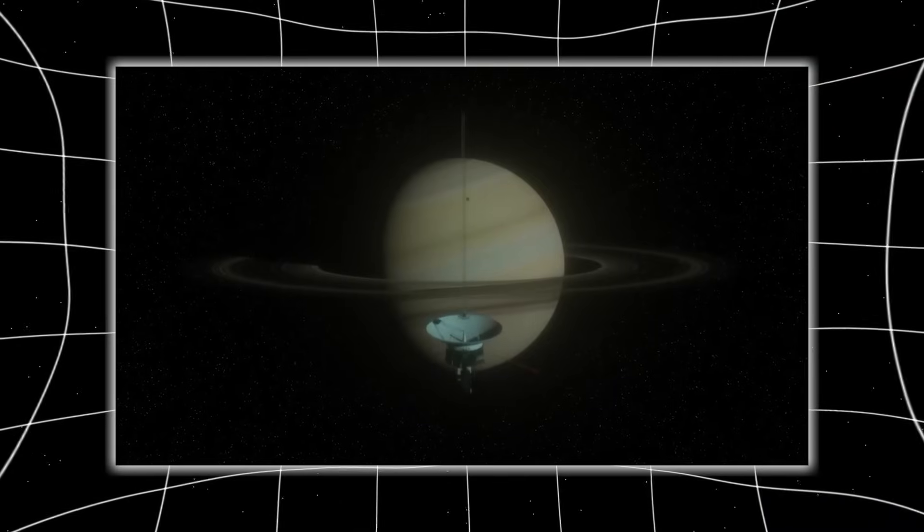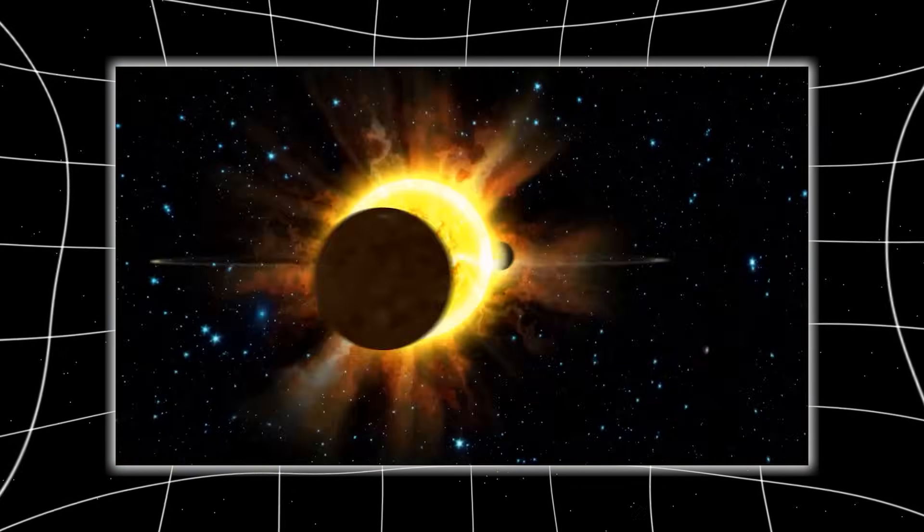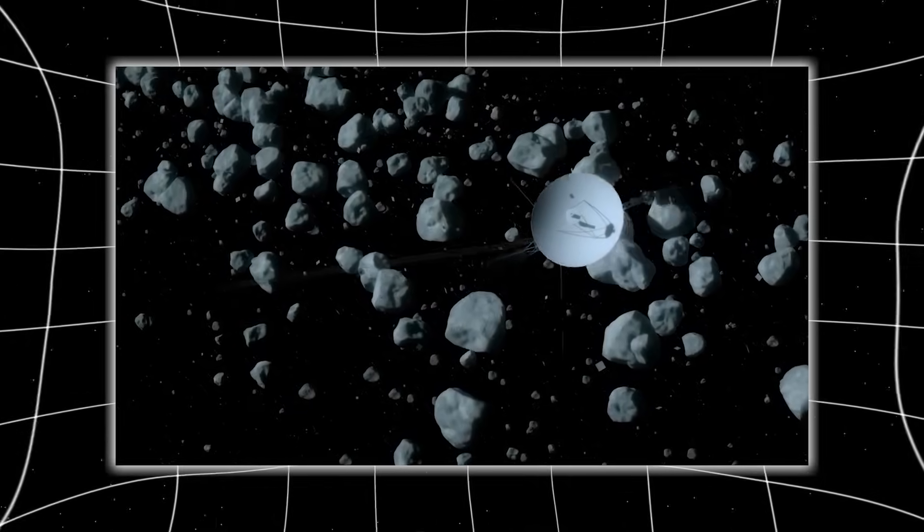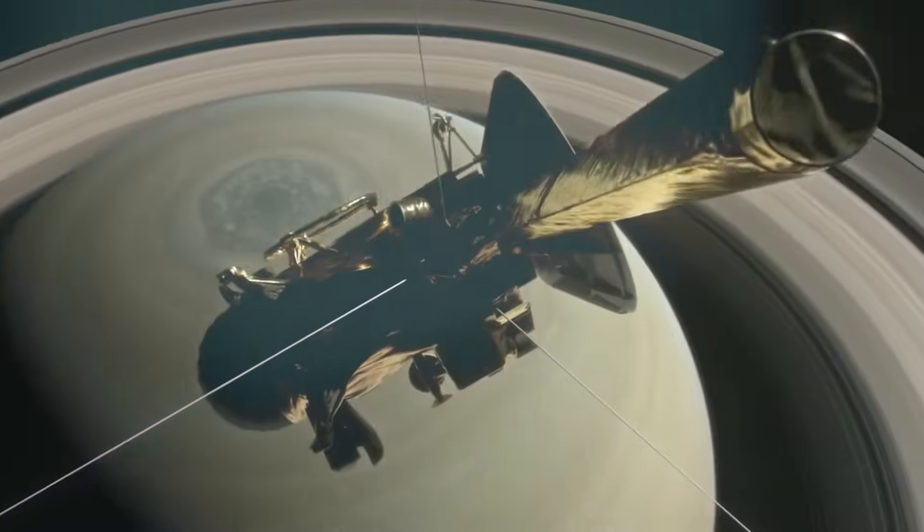With its 3.7-meter radio dish and plutonium-powered heart, Voyager kept moving, outliving its original purpose and continuing its mission far beyond the planets. It now drifts more than 22 billion kilometers away from Earth, deeper into interstellar space than any machine before it.